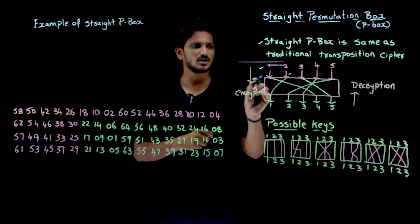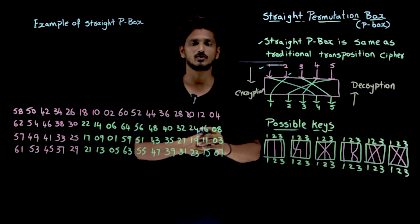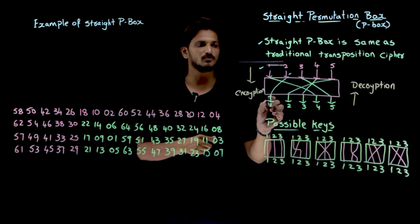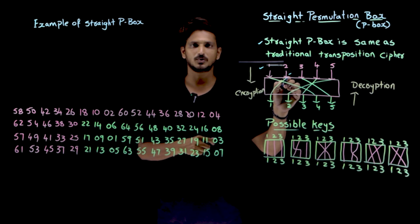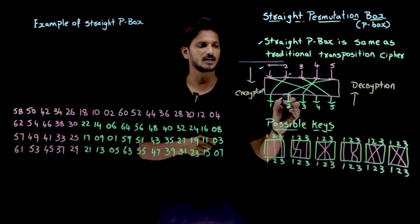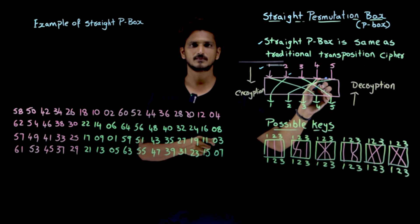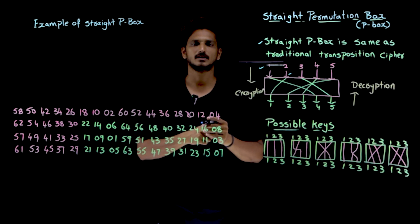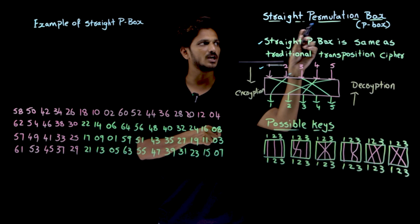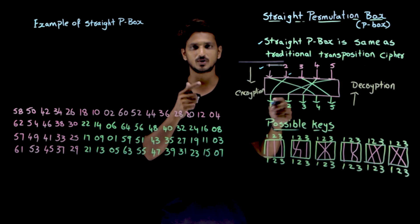During encryption if you follow this mapping, during decryption you do the exact opposite. The first position will be moved to the second position, the second position bit will be moved to the fifth position, and so on — the exact reverse. This is how we go with the Stride Permutation Box in encryption and decryption.